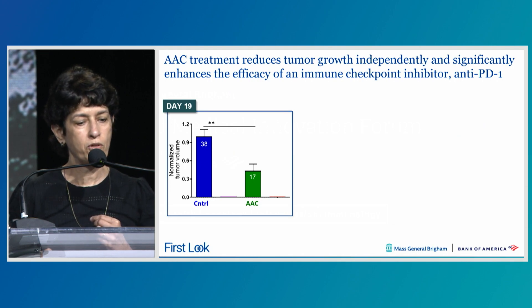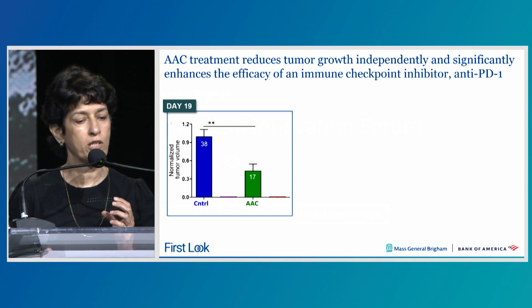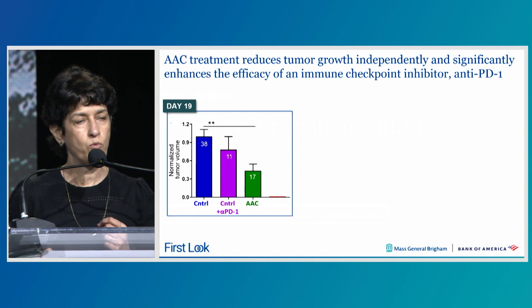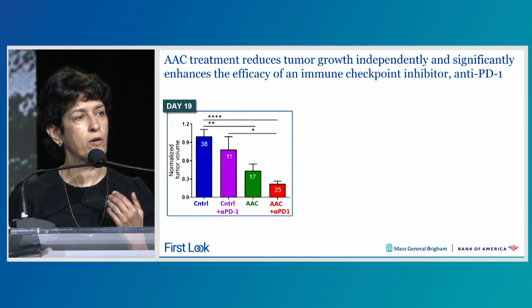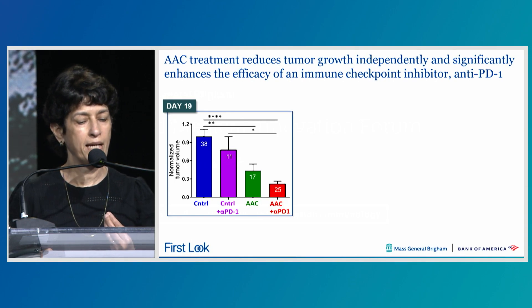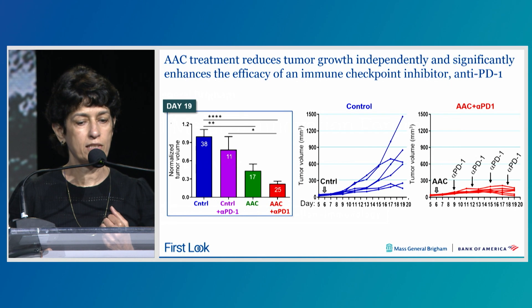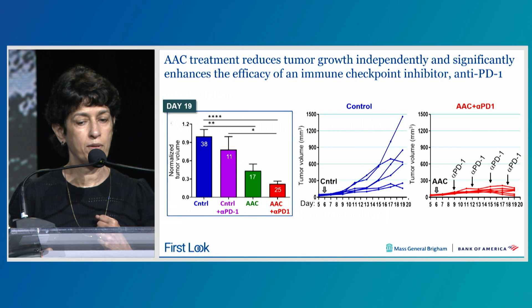AAC treatment alone reduces tumor growth in the B16F10 model. Anti-PD-1 alone has very mild effect, as shown by many others in this model. However, together with AAC, we get a significant reduction in tumor growth. The synergistic effect is due to AAC allowing T-cell expansion and bringing those T-cells into the tumor, where the brakes are then taken off by anti-PD-1. A representative experiment shows very good growth in control animals and a blunting of tumor volume in all mice treated with AAC and anti-PD-1.